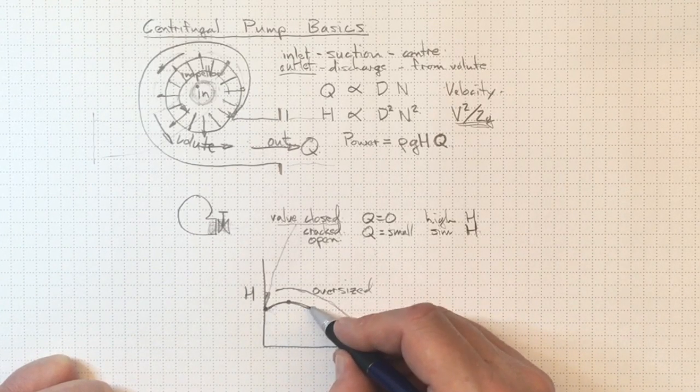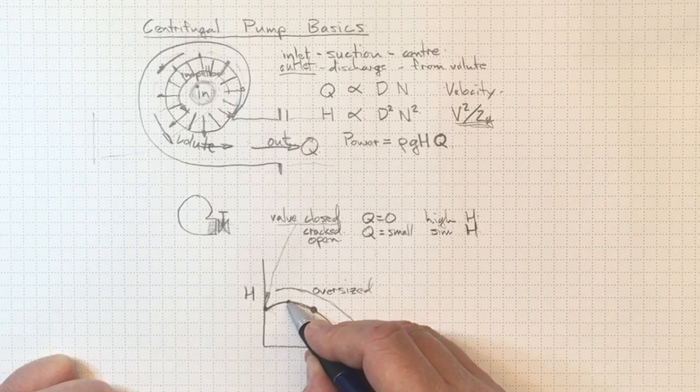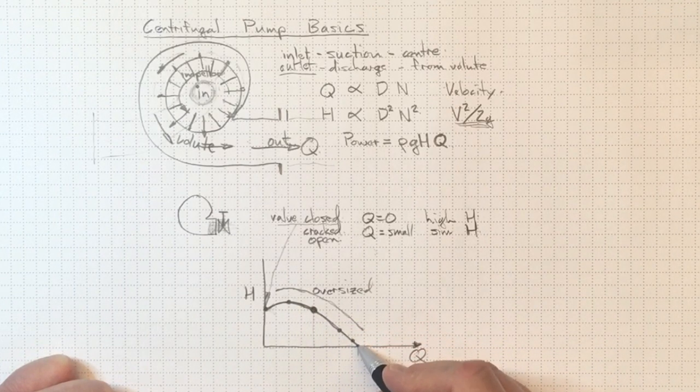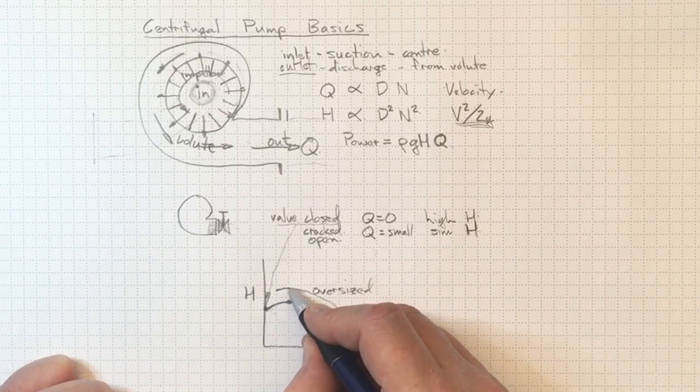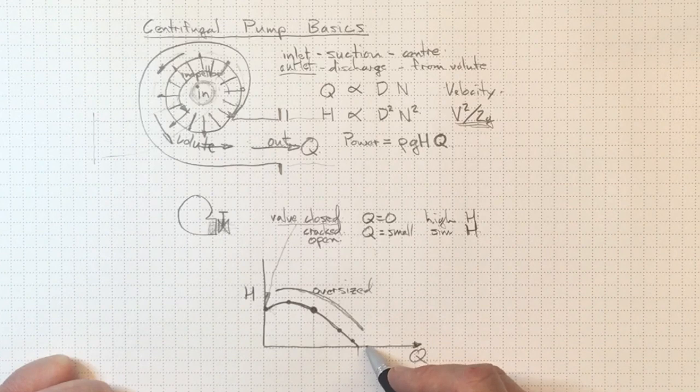It's at a medium level of head and a medium level of flow. And if we go to a lower flow rate, our efficiency may go down. Go to a higher flow rate, our efficiency is going to go down. Go to an oversized impeller, our efficiency is going to go down.